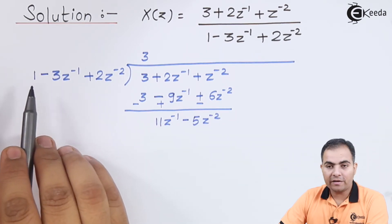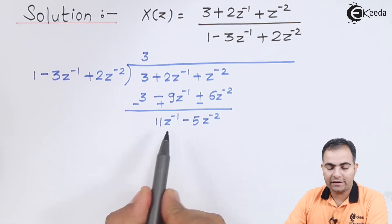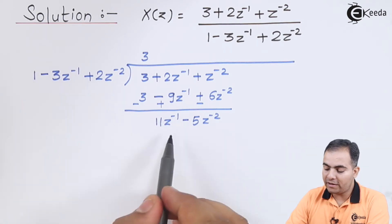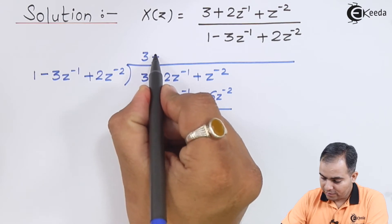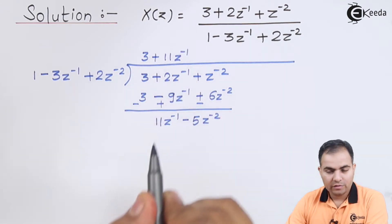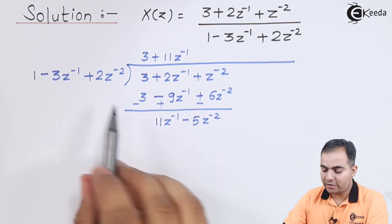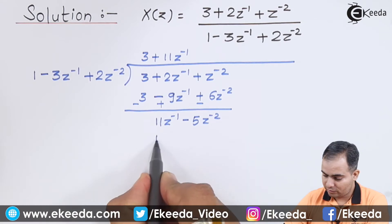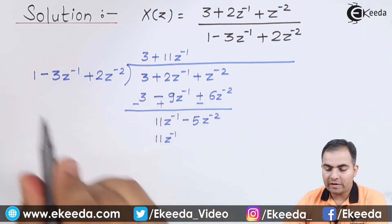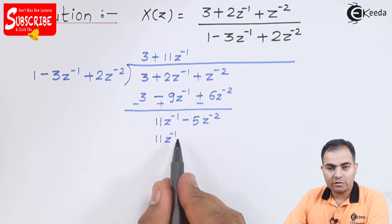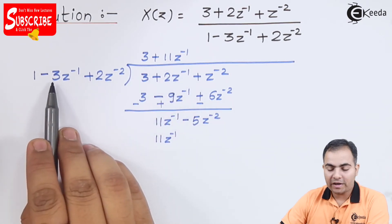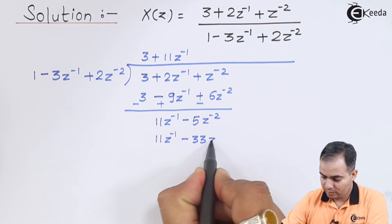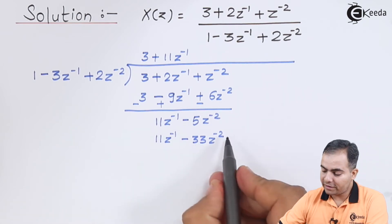The next step is to multiply 1 by some value so that our result is 11Z⁻¹. Since we have 1, if we multiply 11Z⁻¹ by 1, the answer is 11Z⁻¹. So we write 11Z⁻¹ and multiply this value with the whole denominator. 11 times 1 is 11Z⁻¹. Next, 11Z⁻¹ times minus 3Z⁻¹ gives minus 33Z⁻².